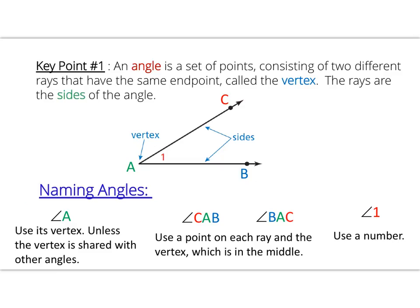Our first key point is to refresh on how to name angles and what an angle is. Angles are formed when two rays come together, meeting at a common endpoint — that's known as the vertex. We have different ways we can name angles: the single letter at the vertex, as long as it's not being shared by another angle. You can also use two points, one on each ray, going in order — the vertex must be the middle letter always.